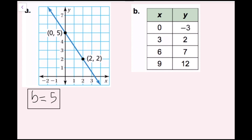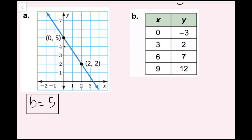Now I just have to find the slope. On a graph, the easiest way to find slope is using rise over run. If I start at this point and then go to this point, I have to go down three units and then right two units. So that means my slope m, or change in y over change in x, is equal to negative three over two, because I went down three and right two. This is a negative slope, and this line is going down from left to right.